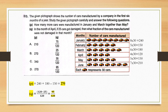Question number 33. The given pictograph shows the number of cars manufactured by a company in the first 6 months of a year. Study the given pictograph carefully and answer the following questions. Each car symbol represents 30 cars, so we multiply the total number by 30. We have written all the numbers: 8 times 30 is 240, 5 times 30 is 150, and similarly for all the months.